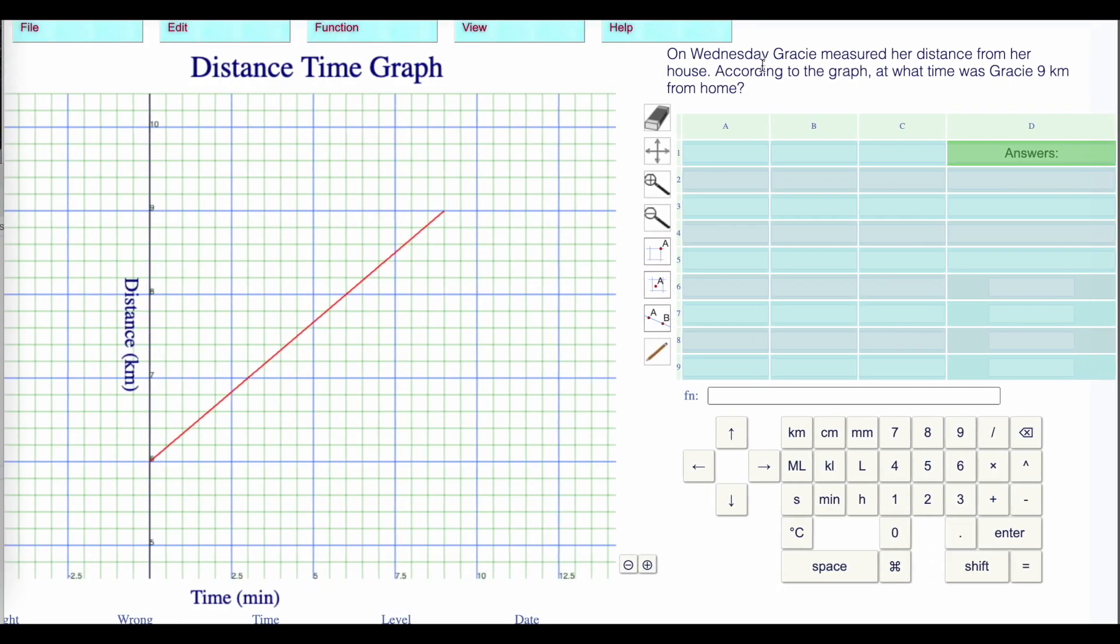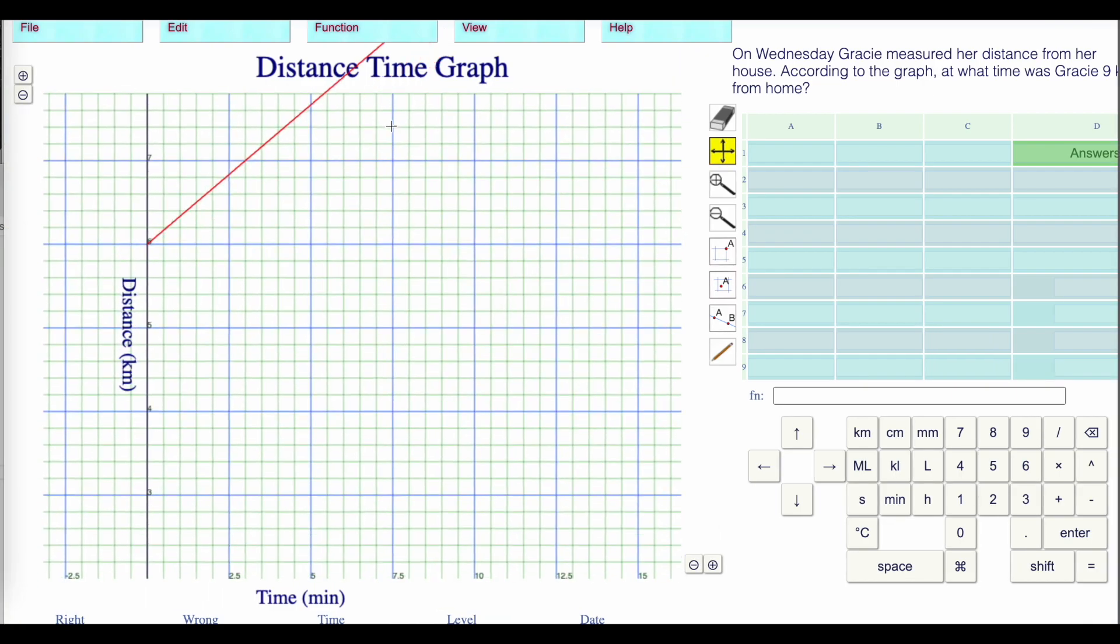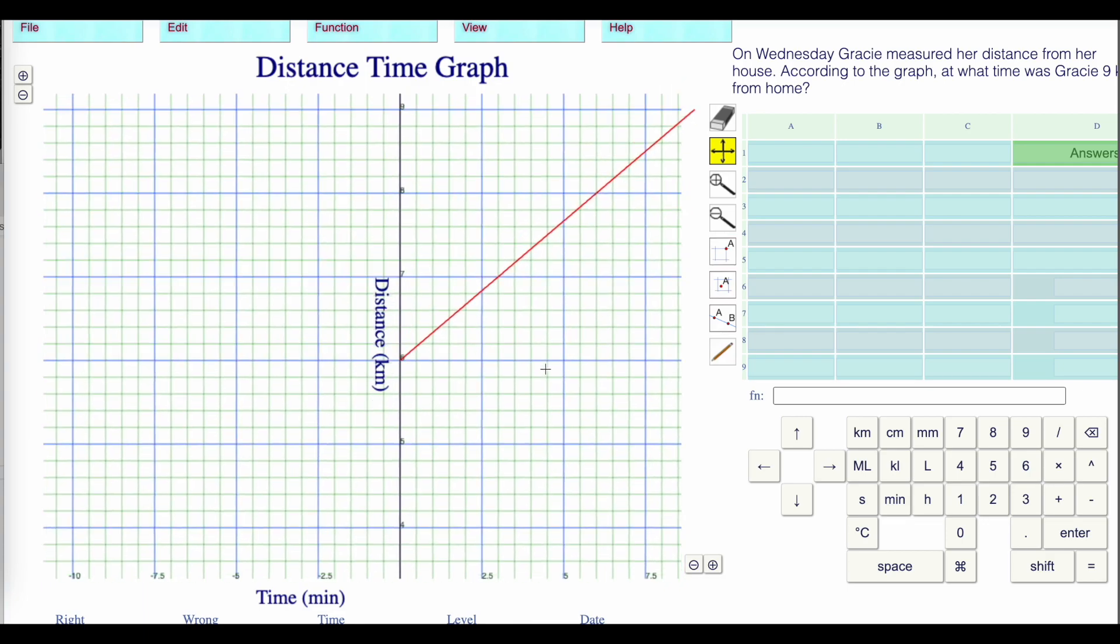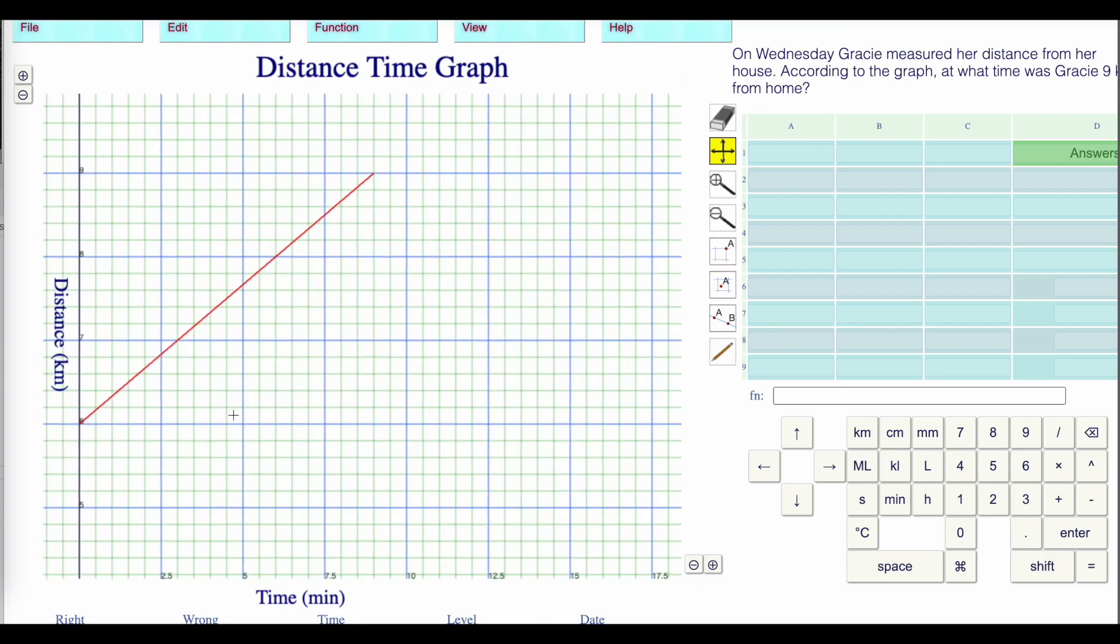On Wednesday, Gracie measured her distance from her house. According to the graph, at what time was Gracie 9 kilometers from home? Down here we can see the origin. You can move the graph around. You can zoom in on different points. We're trying to find 9 kilometers. Here's 9 kilometers and it looks like it's at 7.5. It looks like it's at 9 minutes.